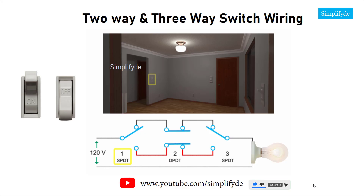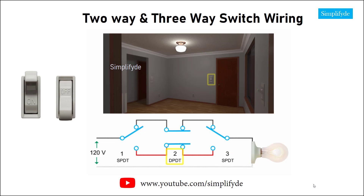If switch one and three are in the up position, and the position of switch two connects the same colored wires in the circuit, the current passes through the black wire and lights the bulb.